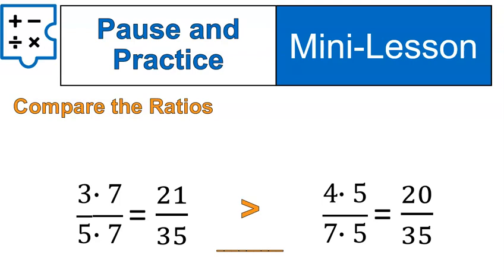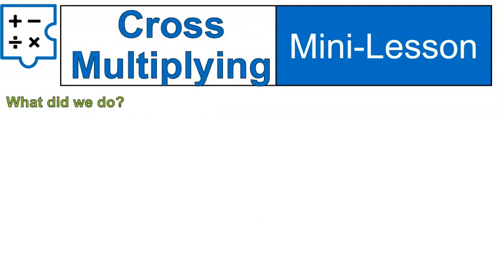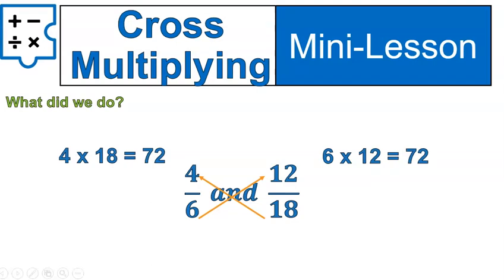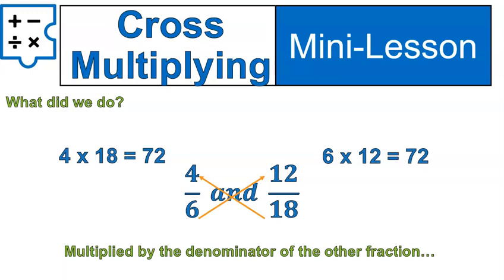All right, now let's think about, let's go back in time a little bit and think about cross-multiplying. When we did cross-multiplying, remember we set up a set of ratios, and then we multiplied the numbers across. I did 18 times 4 is 72, and 6 times 12 is 72, right? Think about that for a second. What exactly are we doing? Well, we are multiplying by the denominator from the other fraction, right? We're multiplying 4 times 18. 18 was the denominator from the other fraction, and we're multiplying 12 times 6, which was the denominator from the other fraction.